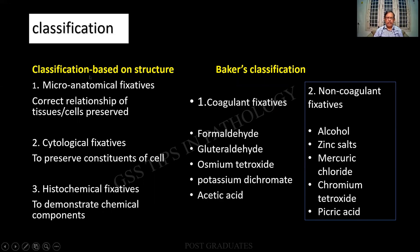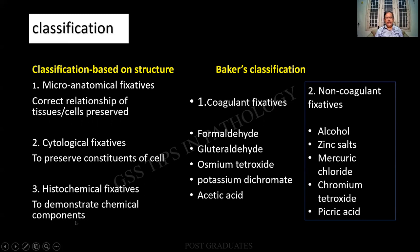Fixatives can be classified based on the structure. Accordingly, there can be micro-anatomical, which shows the exact structure of the slide — the cytology and the histology. The second one will be the cytological fixatives, namely the nucleus and the cytoplasm, and how the various constituents are being preserved. The third one is histochemical — preserving the histological and the chemical nature so as to demonstrate the chemical component. For example, what are you going to do when you do a PAS stain?